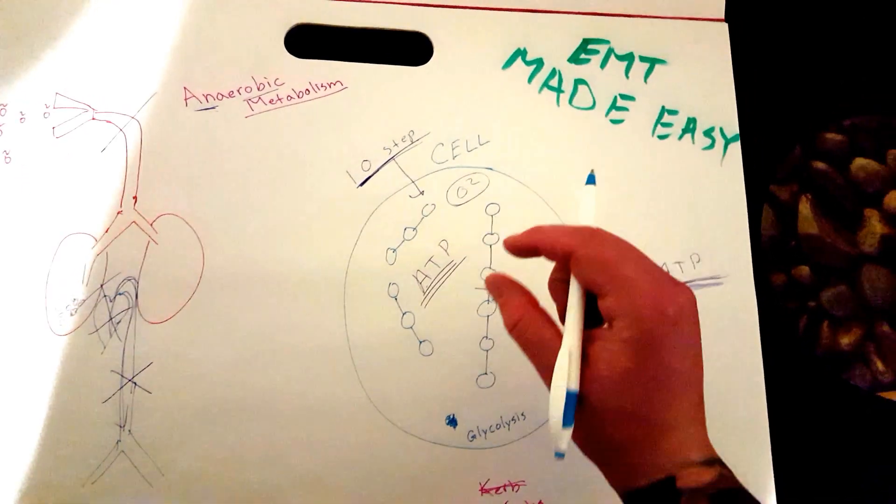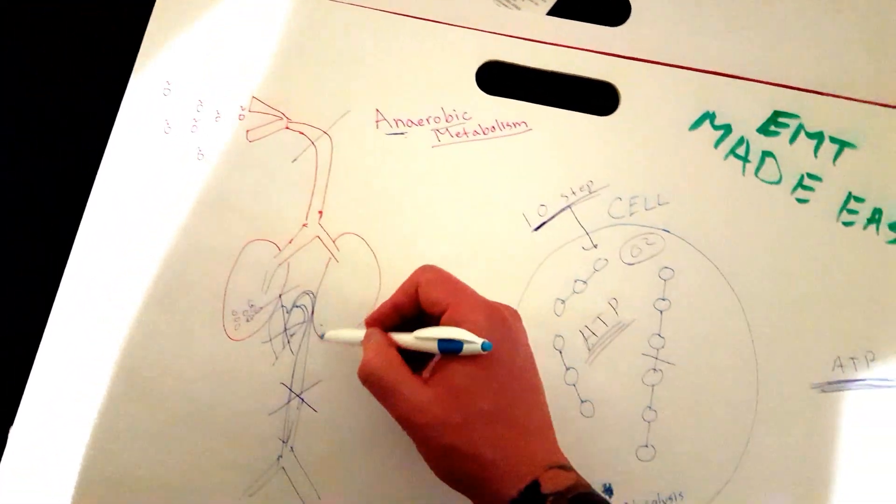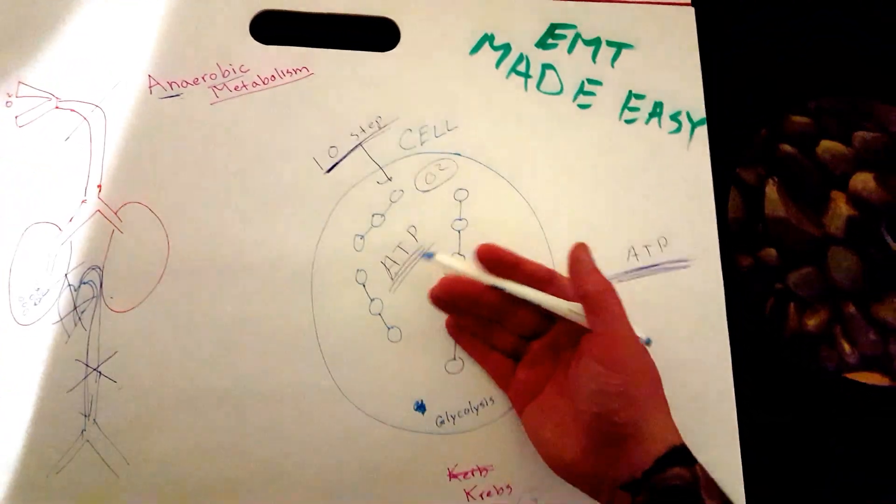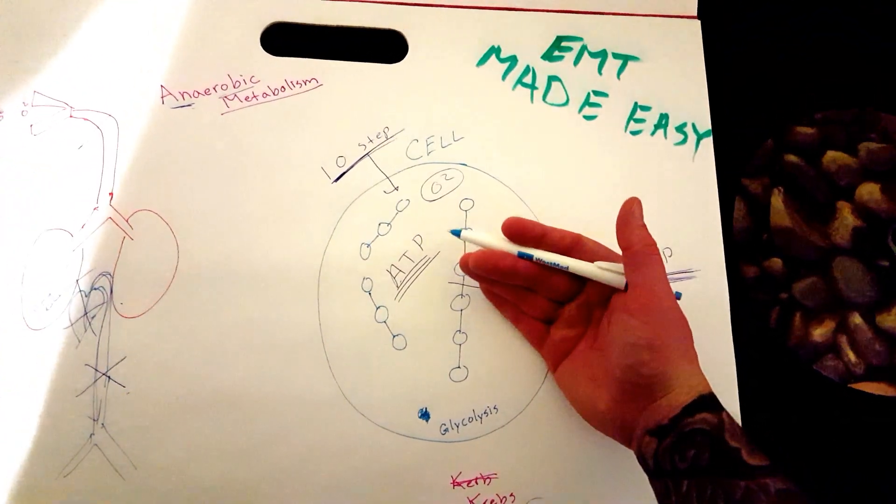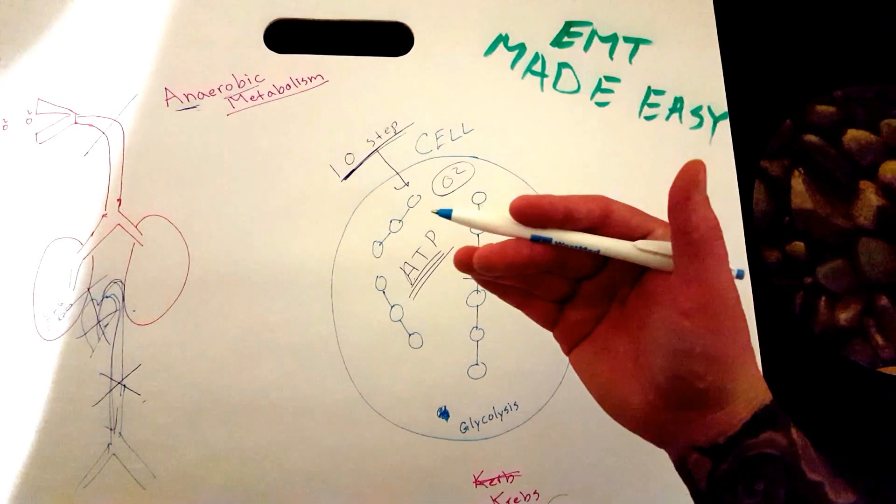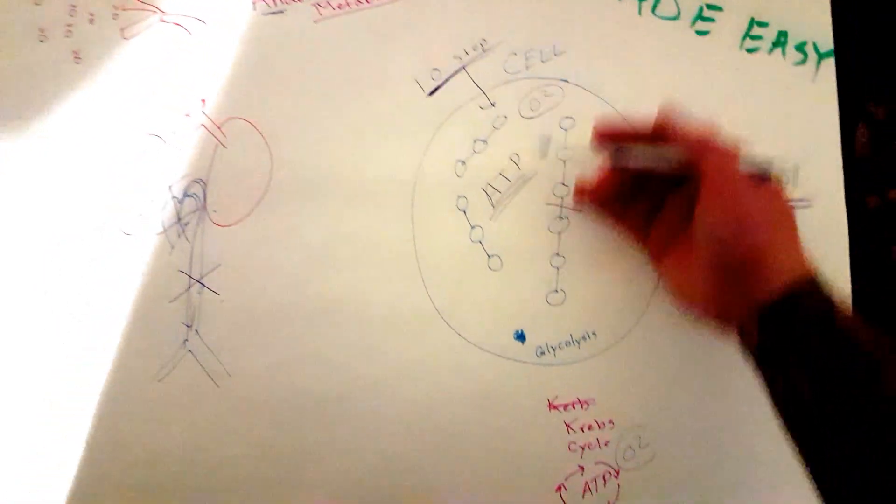You need O2 to go into the Krebs cycle and produce the adequate amount of ATP to keep you alive.